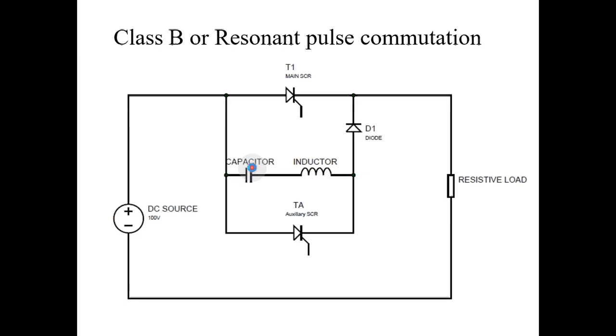If you want to turn off the main thyristor 1, you have to fire the auxiliary thyristor or SCR. To turn off main thyristor, fire the auxiliary thyristor.